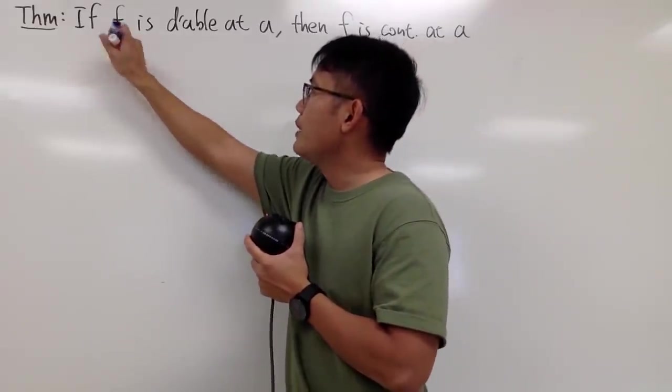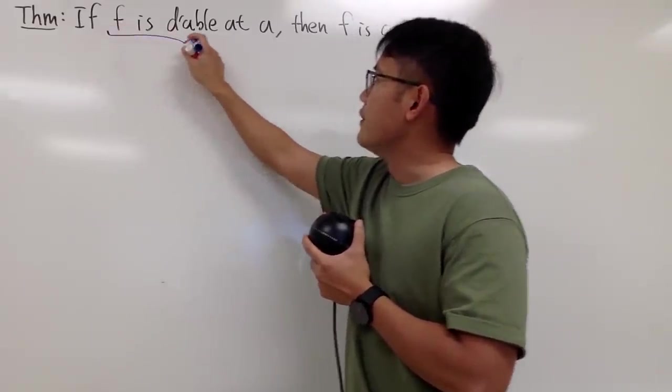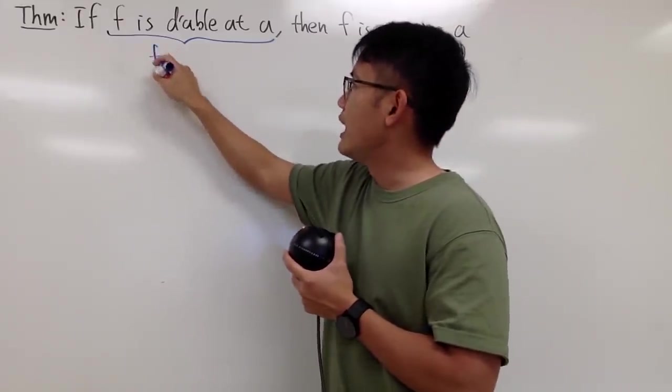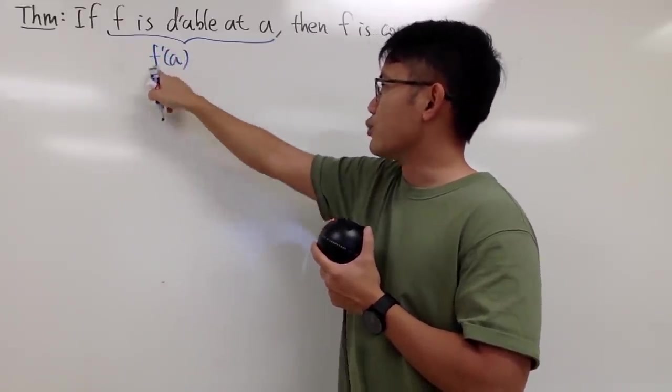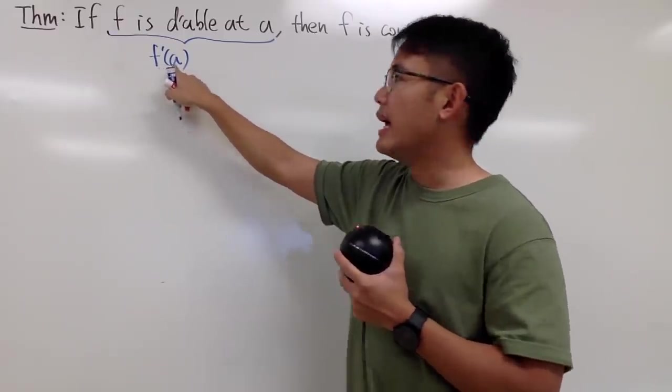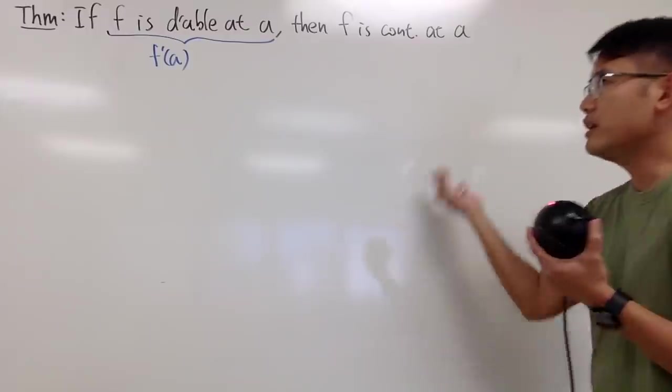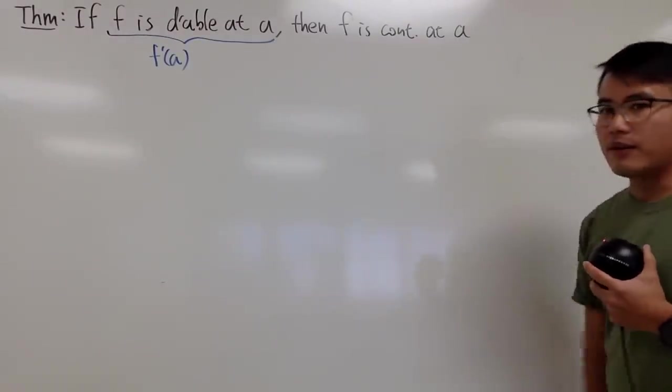So right here, when we have f being differentiable at a, this simply means that we know f'(a), the derivative of f at x equals a. This right here exists. That's pretty much it. And I'm just going to leave that over there for now.